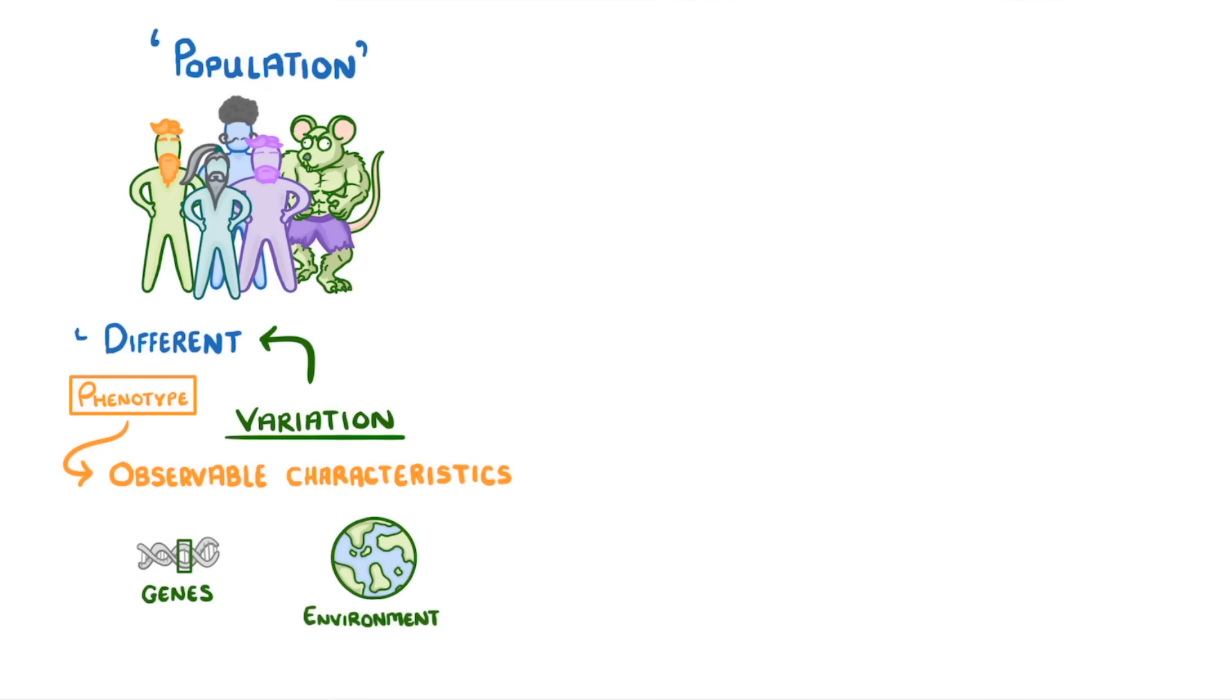If you remember, a phenotype describes the observable characteristics of an individual due to the interaction of two things: their genes and their environment. Genes code for proteins, and a genome, which is all of your genes combined, codes for an entire organism.